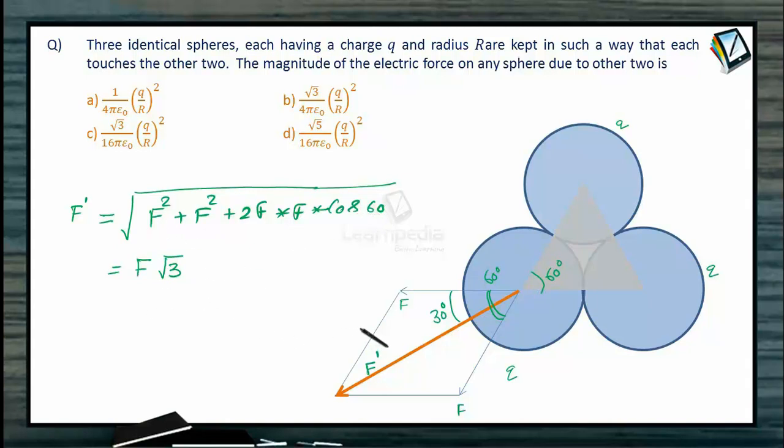So F root 3 will be the answer, but what is F? F is the force between any of these pairs. So F value is going to be F equal to 1 upon 4 pi epsilon naught into q1 q2, that means q square divided by square of the distance. What is the distance between the two charges? That is twice the radius of the spheres because radii are given. So the size of the triangle is 2r by 2r by 2r. So 2r is the size, which is the distance between two spheres.